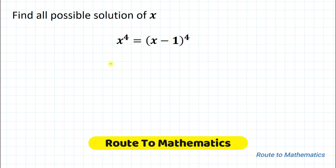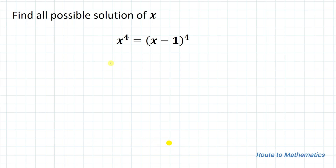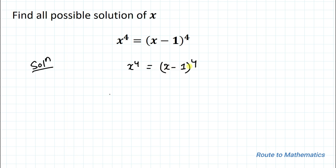Hello everyone, welcome to Root 2 Mathematics. In this video we are going to solve this interesting equation. We are asked to find all the possible solutions of x, given that x to the power 4 equals to (x minus 1) whole to the power 4.